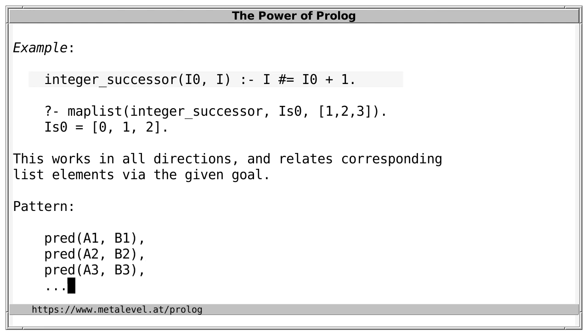the predicate works in all directions and maplist retains this generality. Therefore, when you see a pattern like this in your code, you can shorten it with maplist. And analogously, you can use maplist/4 and so on for predicates with more arguments.